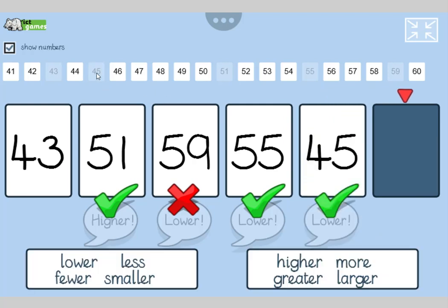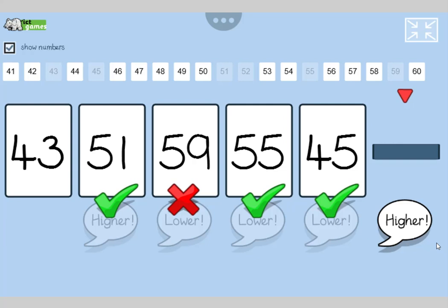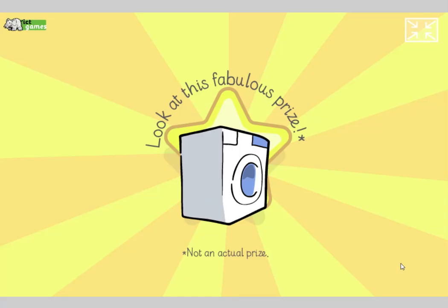Here's a tricky one. So, there's only three numbers lower. I reckon it's going to be, I'm going to say higher. It's got to be higher. Yes. Let's see what we've won. Washing machine. Look at this fabulous prize. Thanks for listening and thanks for joining in. Please come back next time.